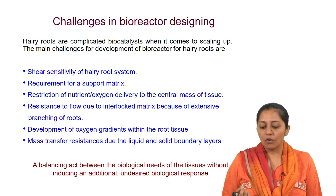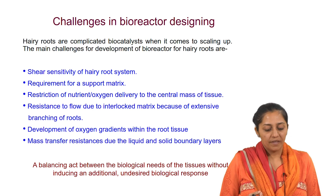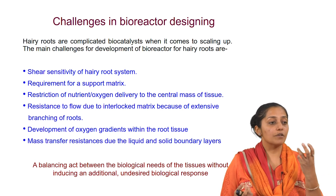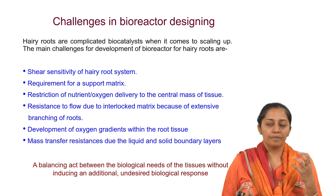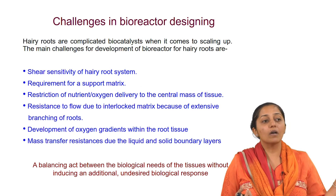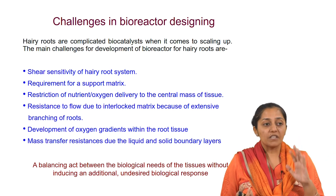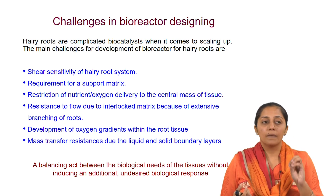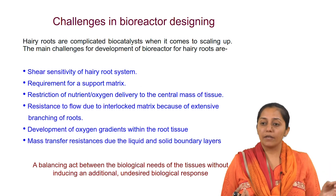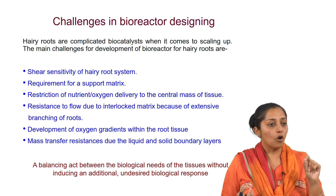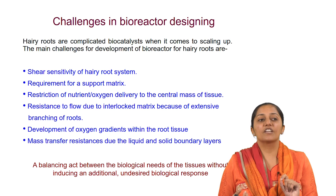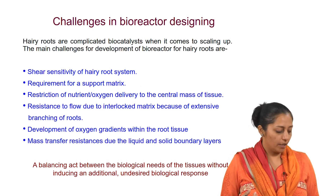There is restriction of nutrient and oxygen delivery to the central mass of the tissue, and resistance to flow due to the interlocked matrix. The size of the biomass, like an immobilized system, is quite big. So there will be thicker boundary layers in comparison to the gas-liquid boundary layer. The mass transfer limitation in these systems is much more severe than when working with plant cells or microbial cells, because in those cases the cell size is small and the solid-liquid boundary layer thickness is smaller. Here, the solid-liquid boundary layer limitation is higher in comparison to liquid-gas.